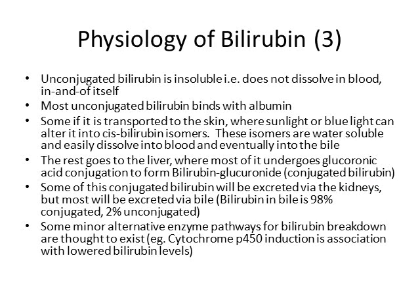A tiny amount of this conjugated bilirubin is excreted via the kidneys, but most of it will be excreted via bile, at least in patients with a working bile duct system. The bilirubin in bile will be about 98% conjugated and 2% unconjugated, from the bilirubin that was altered in the skin. There are some minor alternative pathways to break down bilirubin, which are probably more important in the diseased patient rather than in the healthy patient.